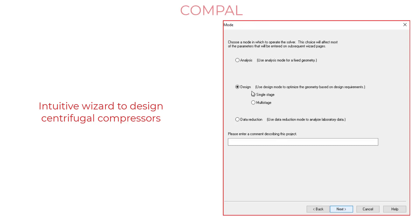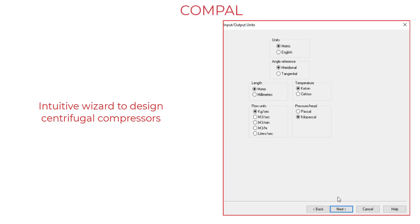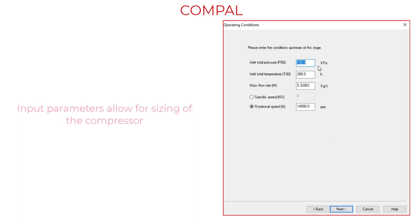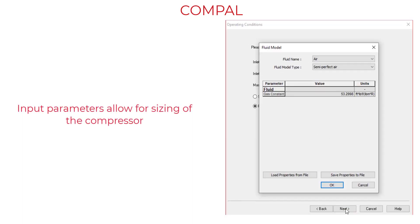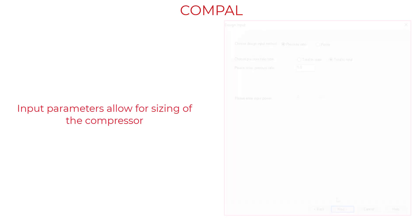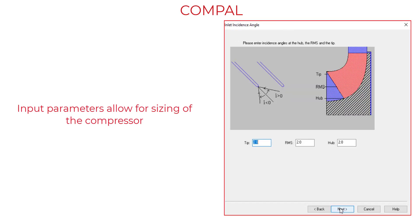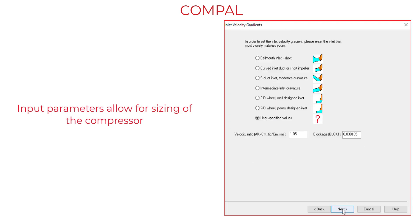Starting in Compow, an intuitive wizard will guide you through your initial design. With a minimum number of input parameters, as well as geometric constraint parameters, we can move through the wizard quickly to obtain our initial design.